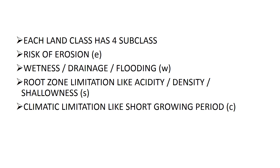So to summarize: Erosion is E; Wetness is W; Root zone limitation — such as acidity, density, or shallowness of soil — is S; and Climatic limitation — like short growing period — is C. The growing period refers to the climate required by crops for growing, flowering, and fruiting. Growing period limitation is referred to as C.